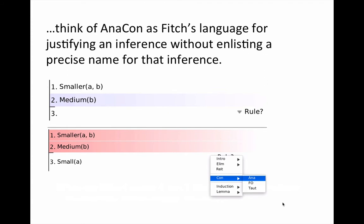In the meantime, here are a couple of screenshots of how the inference works. Notice when we click on the rule drop-down menu, we see CON and we use ANACON when we have a conceptually analyzed inference such as the smaller medium to small inference, or when we, as in the case of chapter 2, do not yet have in Fitch other rules at our disposal.